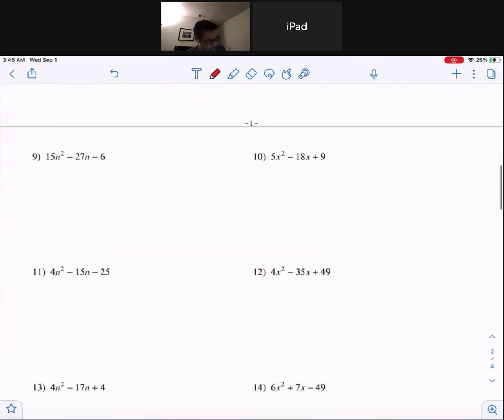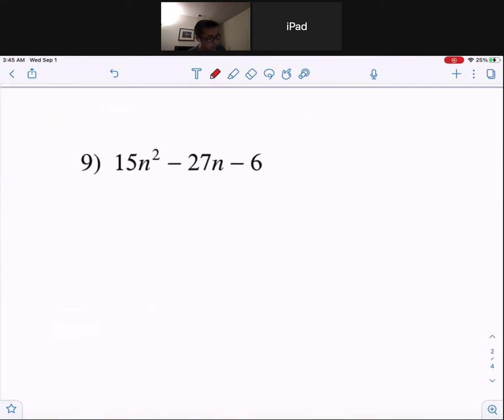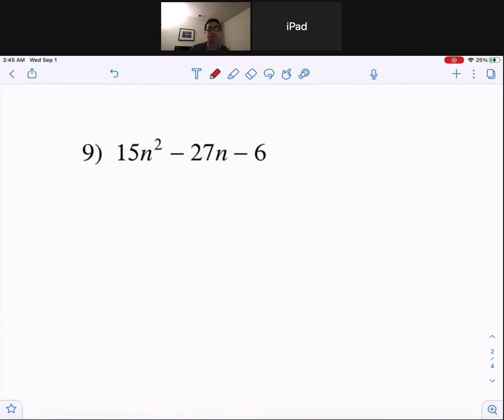I'll do one more for you guys. And the one I'm going to key in on is this one right here, number 9. Notice, before, anytime you guys do these, you always have to check, is there something you can pull out first? And between 15, 27, and negative 6, you guys, you can factor out a 3. 15 divided by 3, 5n squared. Negative 27n divided by 3, negative 9n. Negative 6 divided by 3, minus 2.